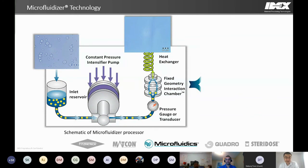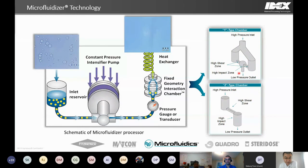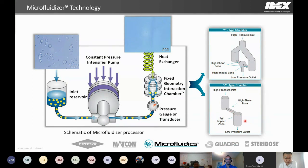We offer two different interaction chamber designs. The Y-type chamber has two microchannels where the sample impinges on itself after passing through, leading to intensive micromixing — ideal for liquid-liquid dispersing and therefore ideal for preparing nanoemulsions, liposomes, and polymer nanoparticles. The Z-type chamber has one microchannel where the material impacts a solid wall after exiting. The Z-chamber is ideal for processing samples containing solids, including various solid suspensions, dispersions, and cell disruptions.